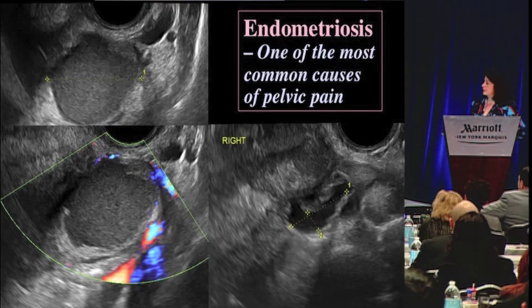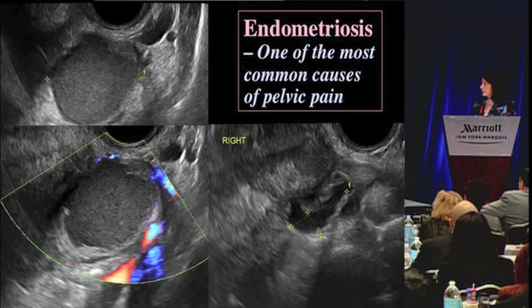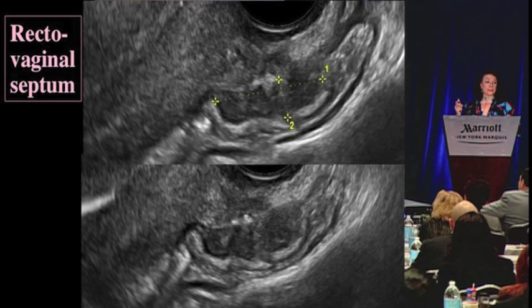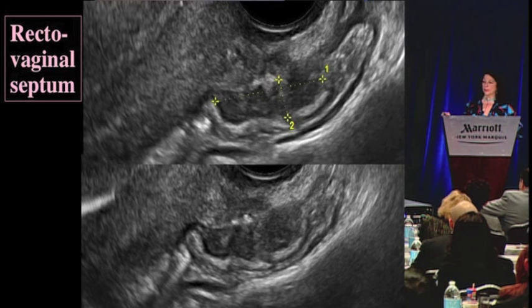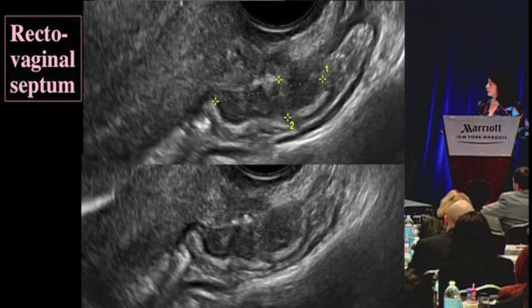Going on to endometriosis — this is a typical endometrioma. It's a cyst and it has this ground glass appearance. It's often associated with a hydrosalpinx because it makes for a lot of adhesions and stickiness in the pelvis. What ultrasound has gotten very good at recently is seeing the implants of endometriosis in the bowel wall. This is a loop of bowel here, this is the lumen of the loop of bowel. This is the normal wall on this side, and that wall is all nodular and thickened. You can see it here — these are implants of endometriosis.